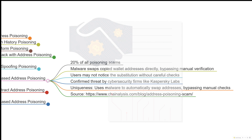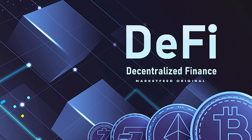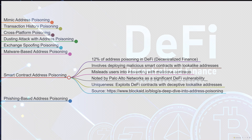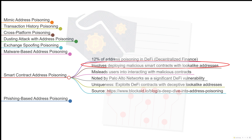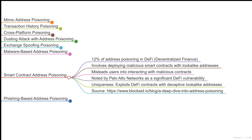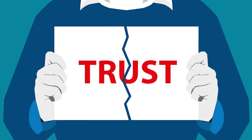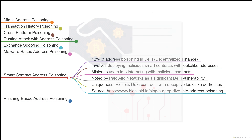Smart contract address poisoning: a Palo Alto Networks report revealed that 12% of address poisoning scams in the DeFi ecosystem involve smart contract lookalikes. This attack method leverages the ease of deploying malicious smart contracts, which can mislead even tech-savvy users. In DeFi, attackers create a lookalike smart contract address to trick users into interacting with the malicious contract. This method exploits the decentralized and trustless nature of smart contracts, which can easily be deployed by anyone, making it harder for users to verify the legitimacy of a particular contract.